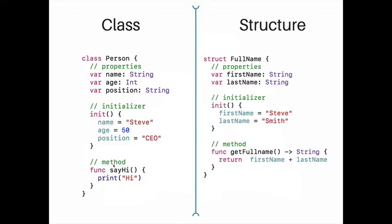We can add functionality using methods. For a structure, we use the keyword 'struct' and give it a name — in this case 'FullName'. Like a class, a structure has properties, an initializer, and methods. We can see that both of them are very similar.